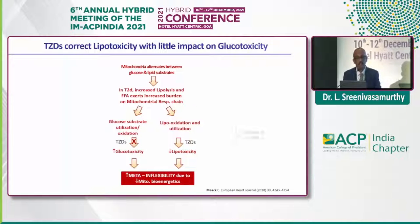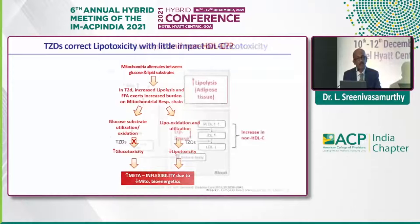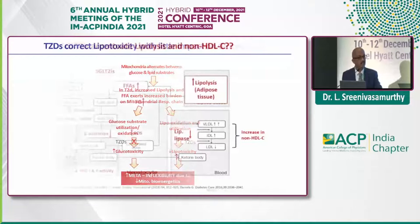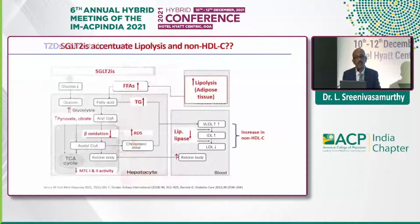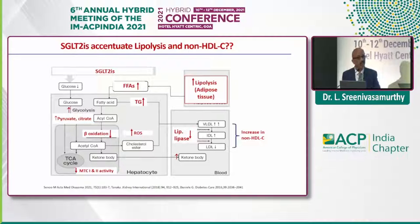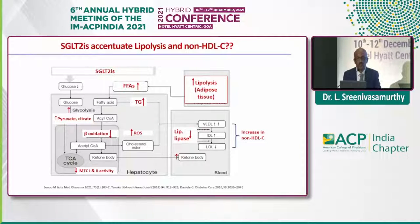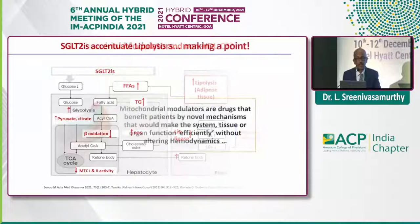Similarly, the newer SGLT2 inhibitor class will accentuate lipolysis and the non-HDL-C component is increased, which is one of the markers for this organ-level mitochondrial dysfunction toxicity. HDL is one of the markers for this metabolic inflexibility. So there remains an unmet need.